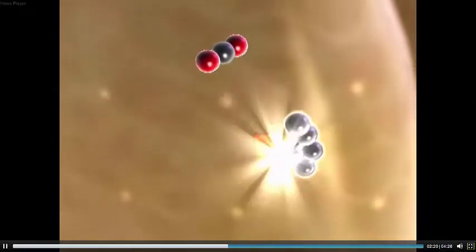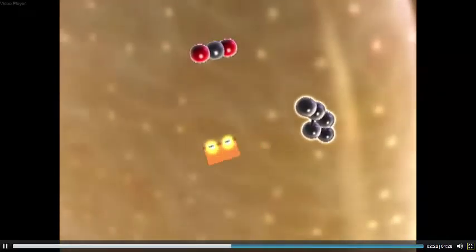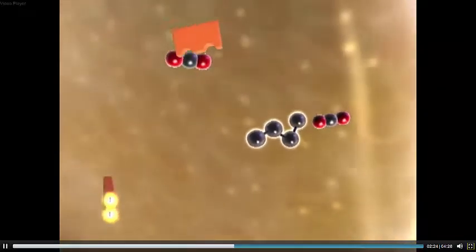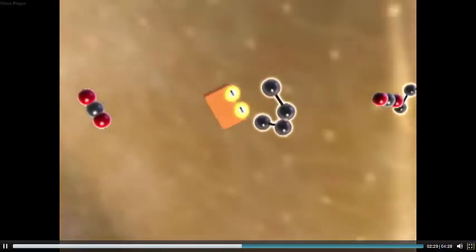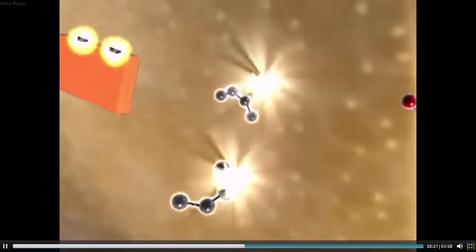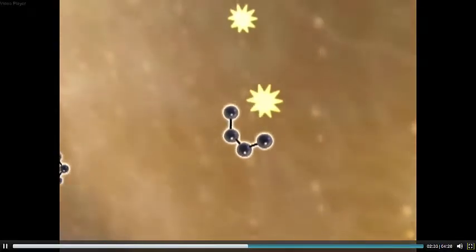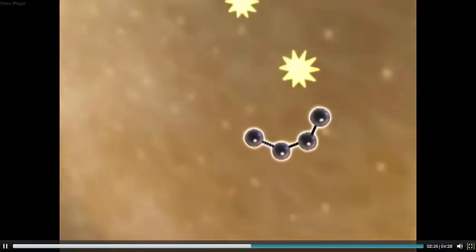Several electrons are captured by electron carriers, and more carbon dioxide is released. The carbon dioxide that you exhale comes from the reactions of cellular respiration. Two ATPs are produced by the citric acid cycle for each molecule of glucose.